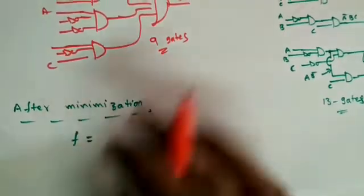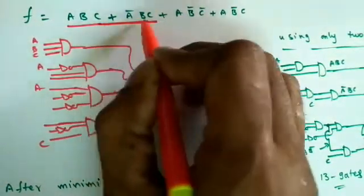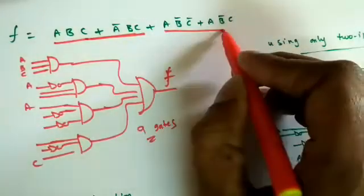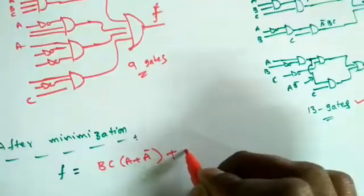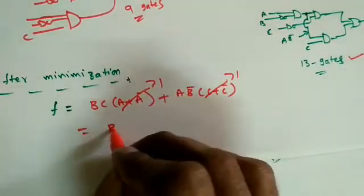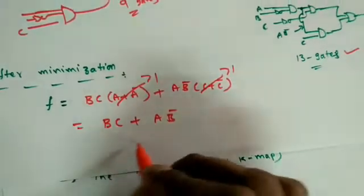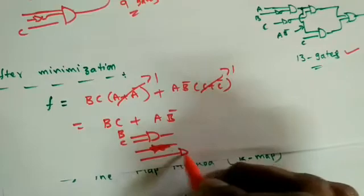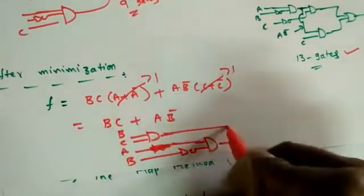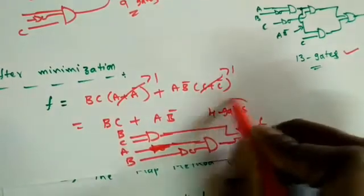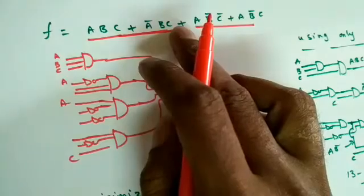After minimization, by factoring out common terms — BC is common from two terms giving (A + Ā) = 1, and AB̄ is common from two others giving (C + C̄) = 1 — the function simplifies to BC + AB̄. Implementing this minimized expression requires just four gates: one NOT gate, one AND gate, one AND gate, and one OR gate.